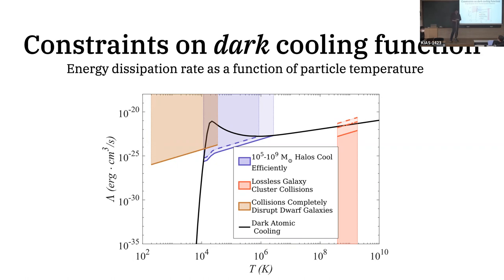Question: You consider dark black hole formation only via gravitational collapse. If you consider other production mechanisms — such as neutron star capture of dark matter — could those change the constraints? Answer: I'm not a big fan of the neutron star capture mechanism because the capture rate is so small. Neutron stars are only a few kilometers in size and the cross section is not that large. Perhaps topological objects could also produce dark black holes, but that's another avenue.